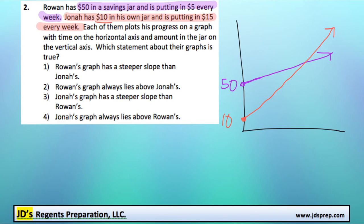The first one says that Rowan's graph, the purple one, has a steeper slope than Jonah's. We can see that's clearly not true because it's increasing not as fast. Rowan's only putting in $5 every week, whereas Jonah's putting in $15 each week. So that's not going to be true.